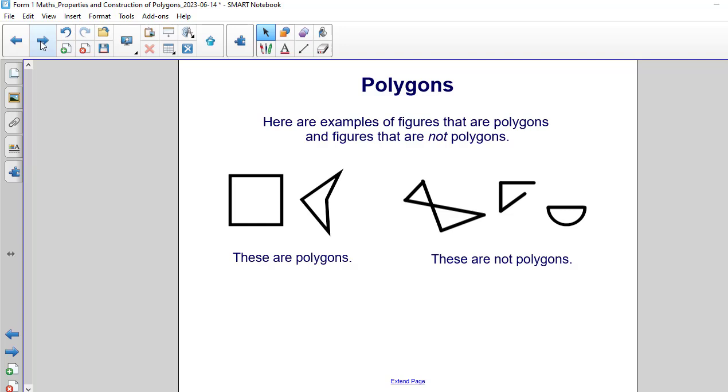Let's start off by looking at some examples of figures that are polygons and figures that are not polygons. On the left side these two shapes are polygons. On the left we have three shapes that are not polygons. By looking at these pictures can you distinguish what determines whether or not a figure is a polygon.